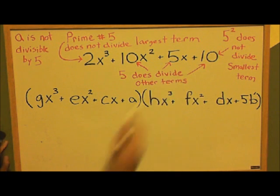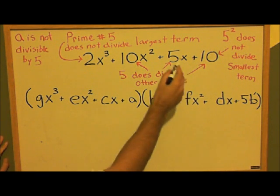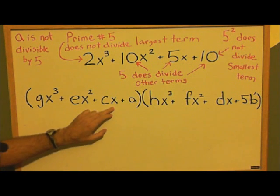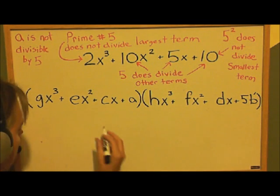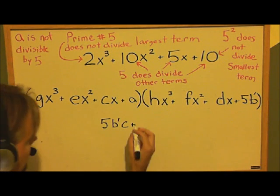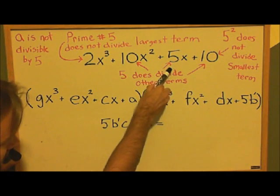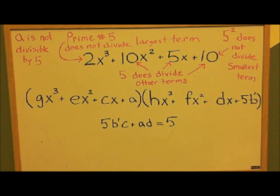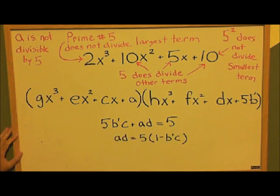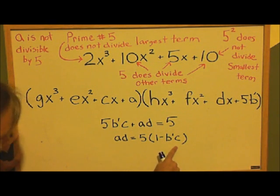Moving from right to left, we want to look at the terms that can give us an x. So we have cx times 5b prime, and we have a times dx. This is going to have to equal 5x. So now I'll rearrange this. I've put the 5 here and the 5b prime c here.